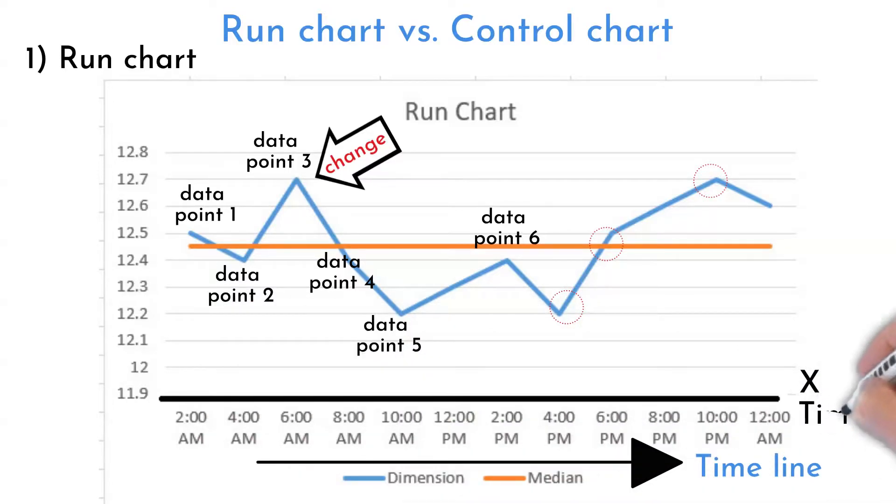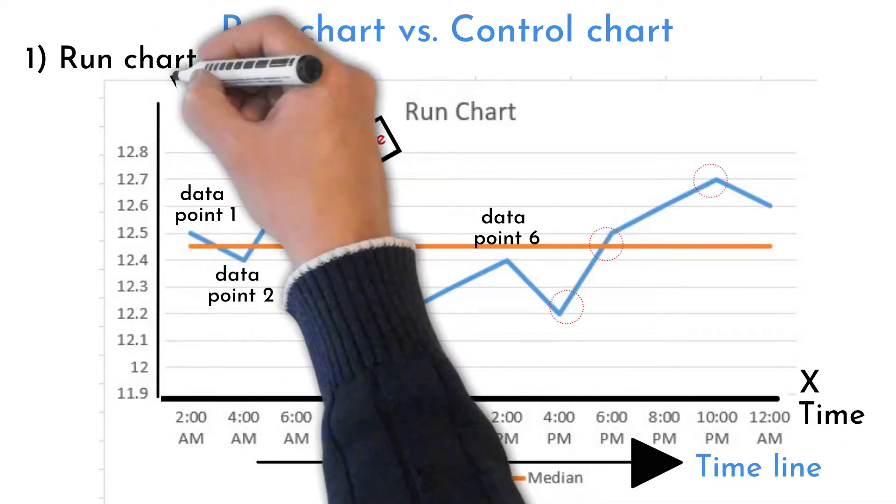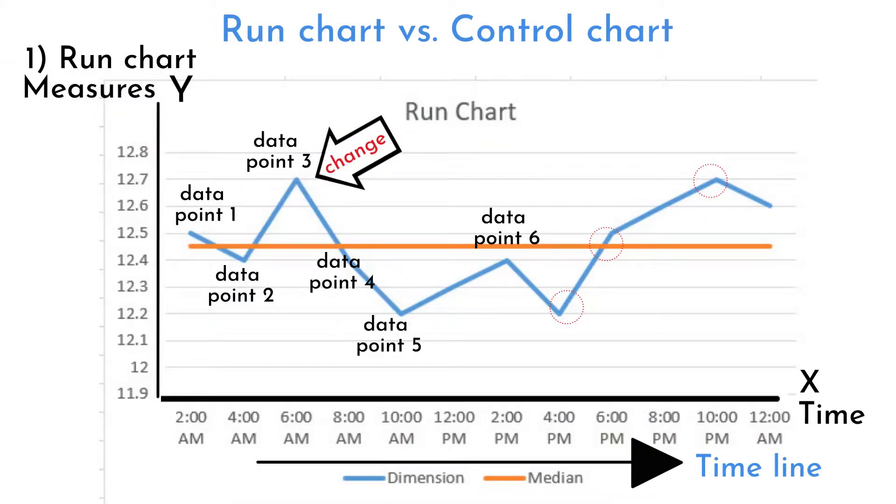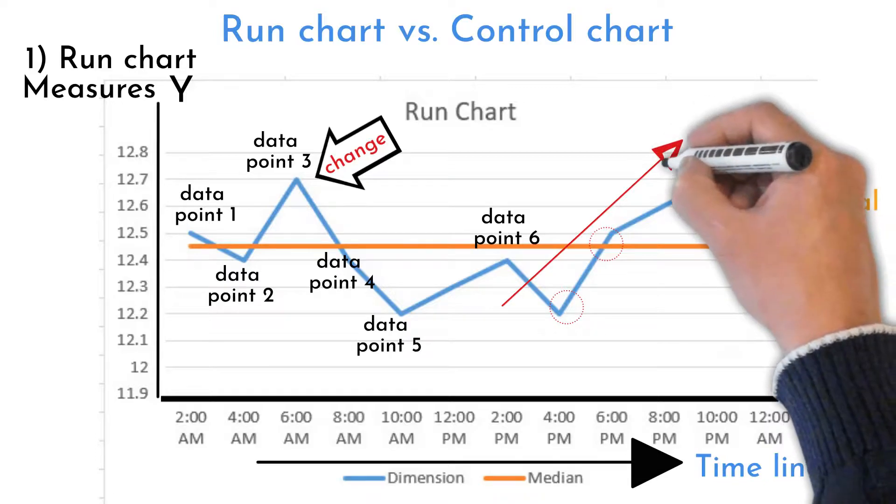Run chart is a two-dimensional graph. X-axis represents time, and measures are on Y-axis. The line in the middle of this graph is median. Median is a value that splits increasing order results into two equal halves. It helps to visualize trends.